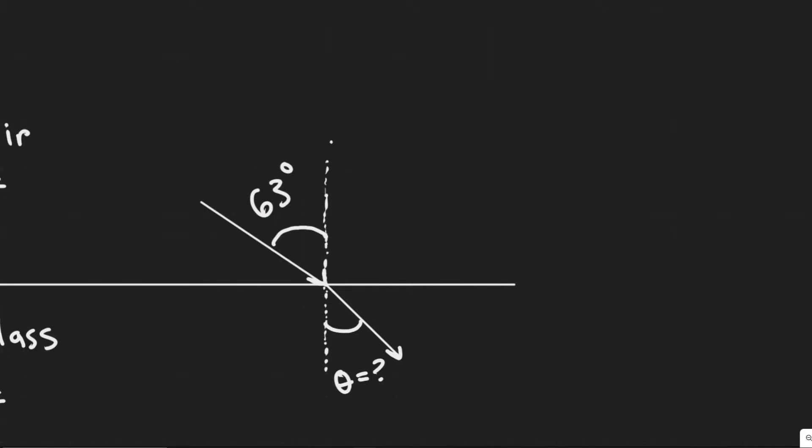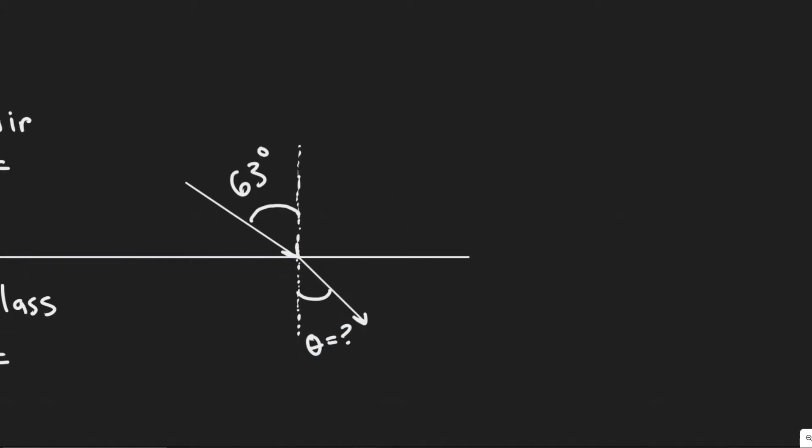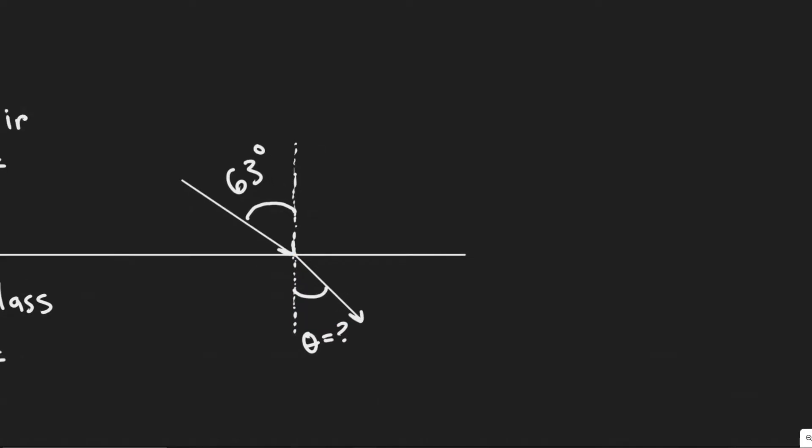We know it's 63 degrees to the normal. The normal is just this line right here, which is perpendicular to the surface. We know it's going to enter this glass pane, and it's going to change in the angle as a result of Snell's Law.